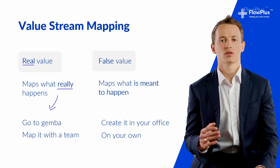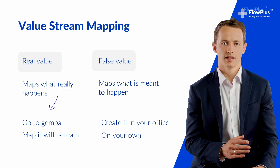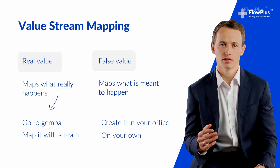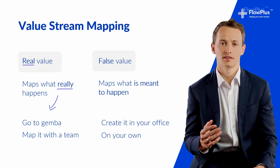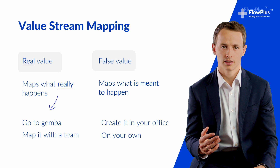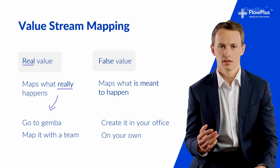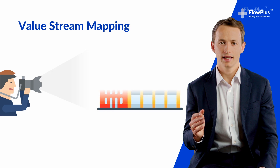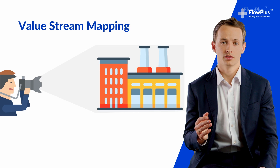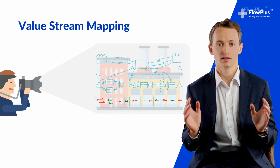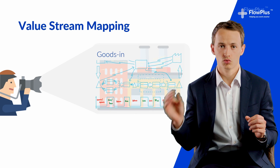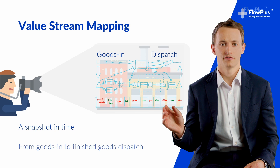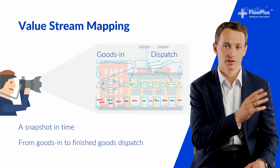So let's not create these maps in isolation. Let's work with a team, use real data from the Gemba and seek to truly understand how things are really operating, even if it's not how they were intended. So what is a value stream map? It is a snapshot in time, just like a photograph, that allows you to view all the steps that take place between raw materials entering the factory at goods in and finished goods leaving the factory at the other end.